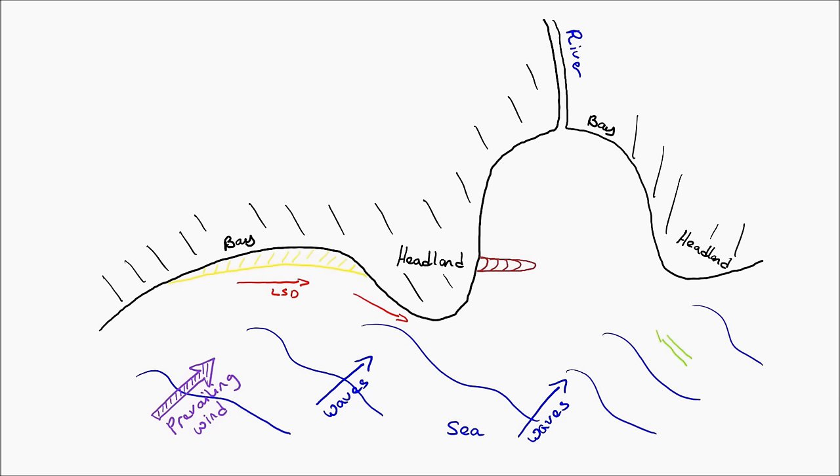Now every so often the wind direction can change. We call this change a secondary wind, and what this wind will cause is it will cause the deposited material to move or shift direction and to move inland a bit. This causes this formation that we see on spits called a hook to form. You can see the hook that's labeled in on the diagram.